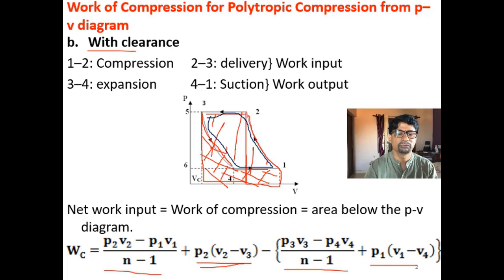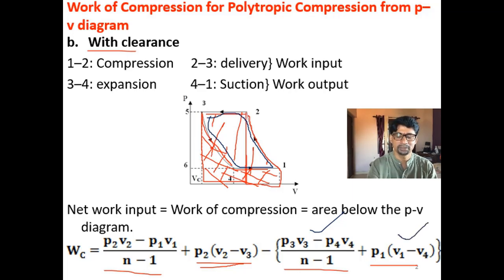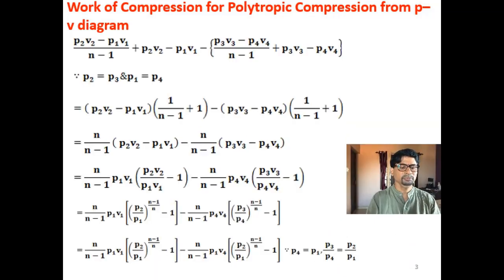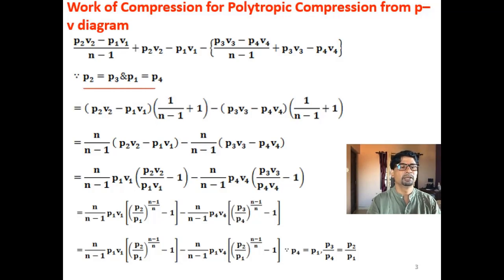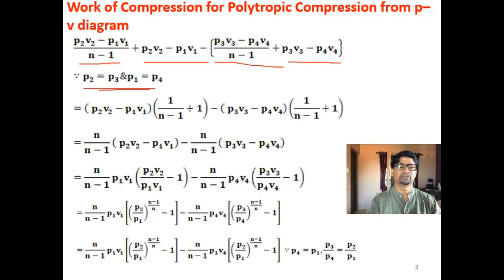During process 3 to 4, the work of expansion is P3V3 minus P4V4 divided by (N minus 1). During suction it is P1 into (V1 minus V4). Now P2 equals P3, and P1 equals P4. After substituting these conditions, you get P2V2 minus P1V1 for the first group, and P3V3 minus P4V4 for the second group.